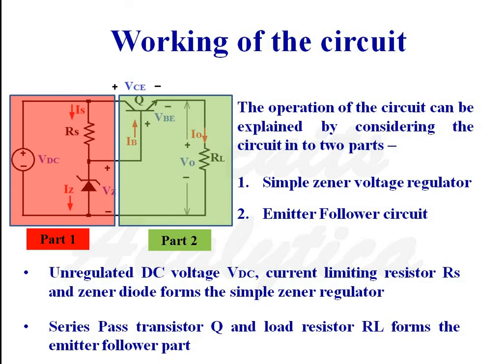The operation of the circuit can be explained by considering the circuit in two different parts. The first part is a simple zener voltage regulator, which consists of the unregulated DC voltage, series resistance RS, and zener diode — shown in the red colored block. The second part is an emitter follower circuit, which consists of the transistor and load resistance RL — shown in green color.